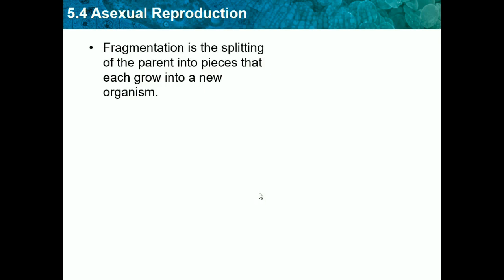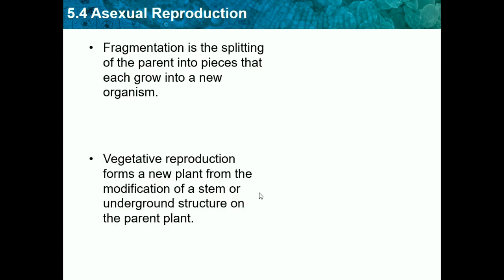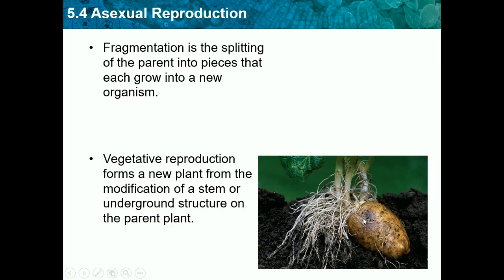Fragmentation is the splitting of the parent into pieces that each grow into a new organism. A real example would be jellyfish — if you cut them in half, each half becomes a new jellyfish. During a jellyfish crisis when they were going extinct, scientists cut jellyfish into pieces and threw them back into the ocean to grow. Another type is vegetative reproduction, which forms a new plant from modification of a stem or underground structure of the parent plant — like roots producing a new potato plant.